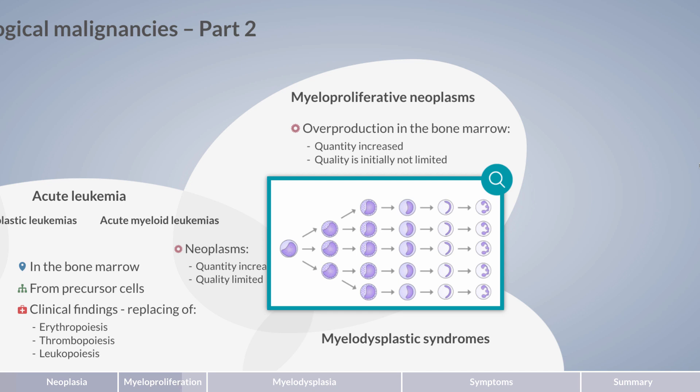During the course of disease, further mutations may arise which affect cell differentiation and thereby cell function. This so-called maturation arrest leads to a more aggressive disease and eventual progression to acute myeloid leukemia.